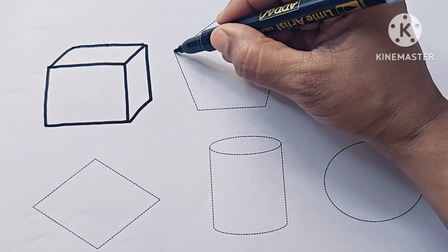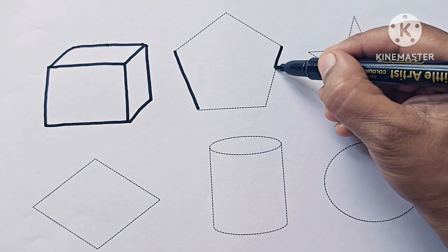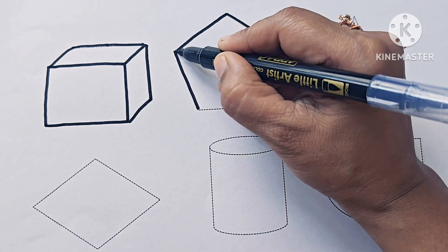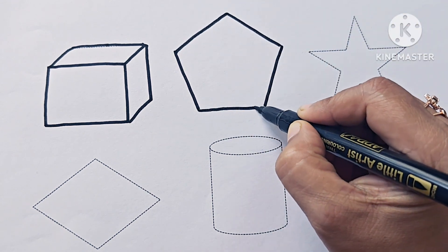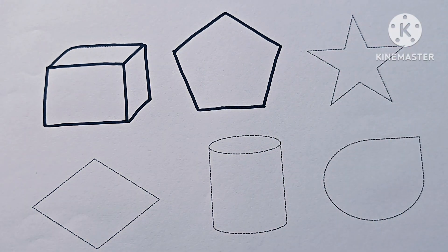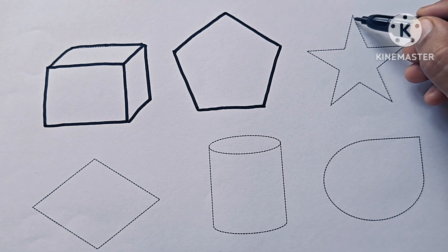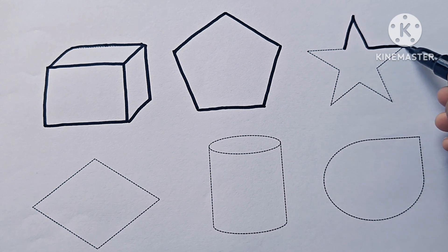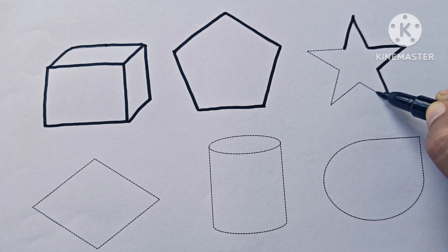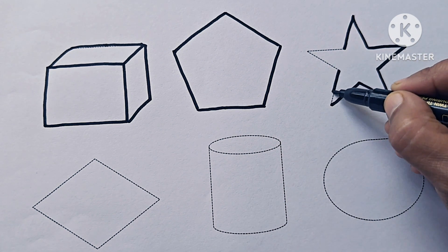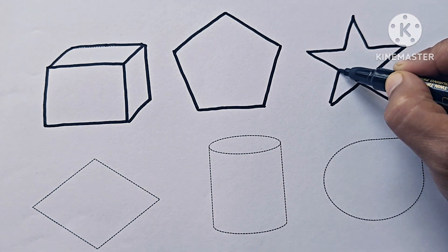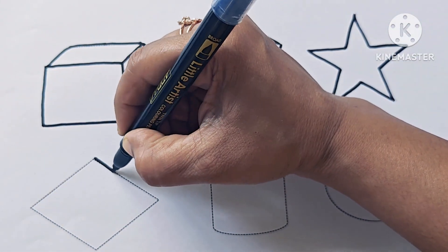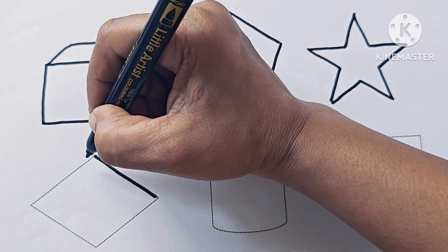This is a pentagon. A pentagon has five sides. It is a 2D shape. This is a star — it is a five-pointed star. This is a rhombus.